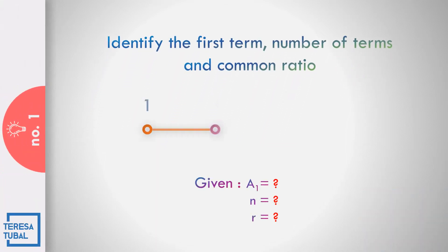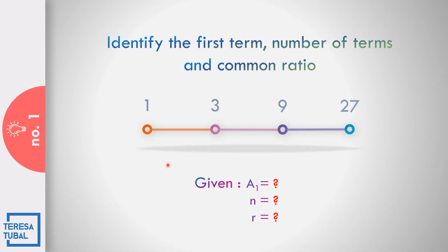Question number one: Identify the first term, the number of terms, and the common ratio in the given geometric sequence 1, 3, 9, and 27. Correct! The first term is 1. The number of terms is 4. And the common ratio is found by dividing the second term by the first term: 3 divided by 1. The answer is equal to 3.